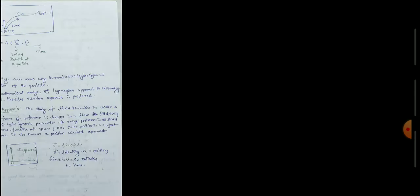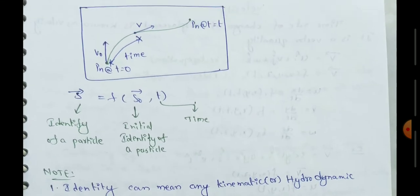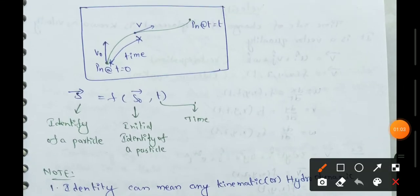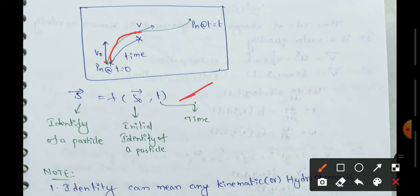In the Lagrangian method, the equation is S-bar equals a function of the initial identity of a particle with time. This is a flow and motion-based approach, where acceleration, velocity, and density are described by this equation.